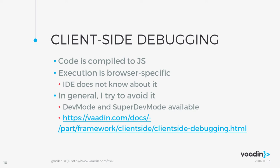At least for Eclipse you have dev mode and super dev mode. The first one I think is discontinued from Google nowadays — it means the JavaScript code is compiled on the fly and you can place breakpoints in Eclipse. Super dev mode means you can debug from a browser that supports source maps — I think Chrome is currently the main one doing it. Setting this up is quite advanced and beyond the scope of this lecture — there is a link to the official documentation.